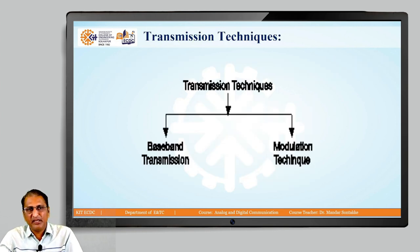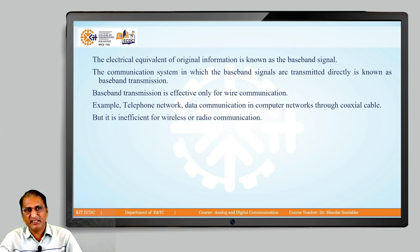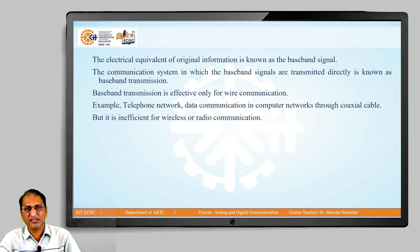Transmission techniques are two: baseband transmission and modulation technique. Baseband means the original signal is transmitted directly. Modulation means we are going to change it. The electrical equivalent of original information is known as the baseband signal. The communication system in which baseband signals are transmitted directly is known as baseband transmission. Baseband transmission is effective only for wire communication. Examples include the telephone network and data communication in computer networks through coaxial cable.